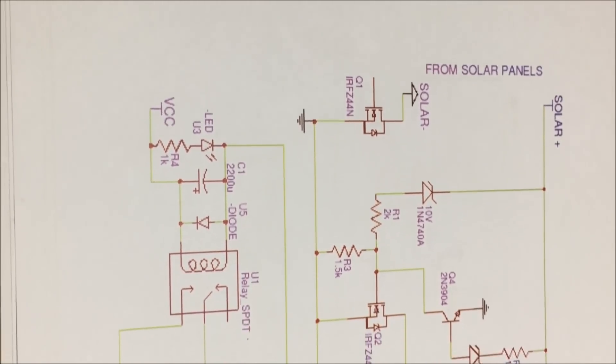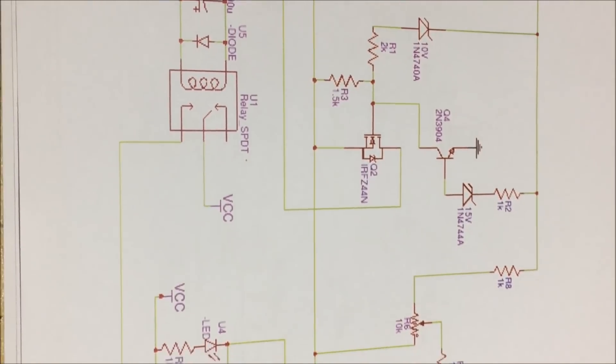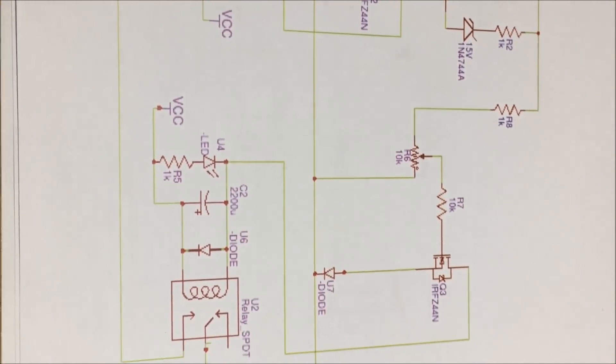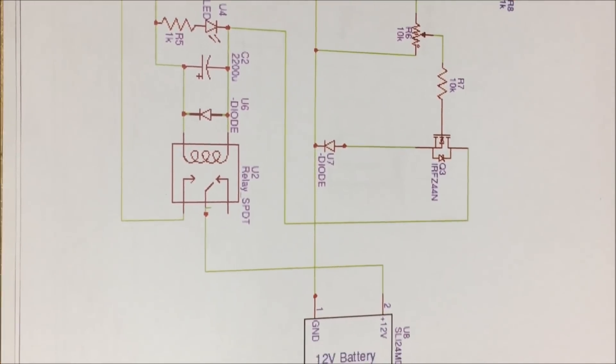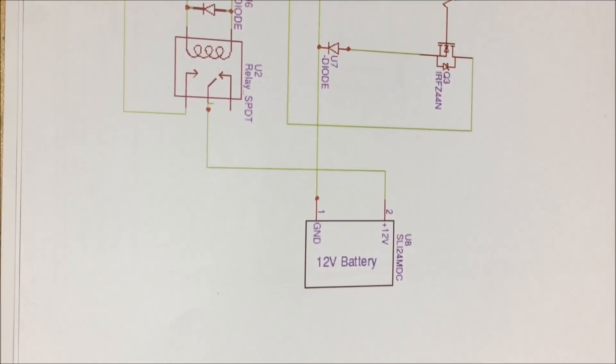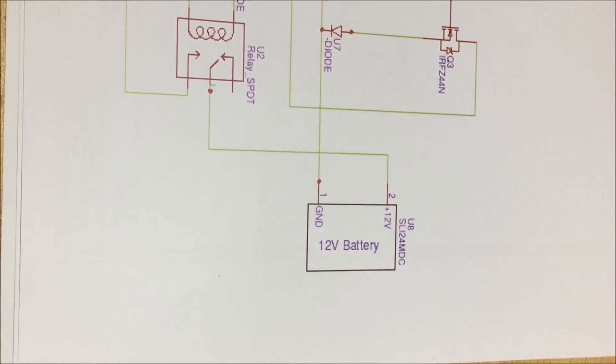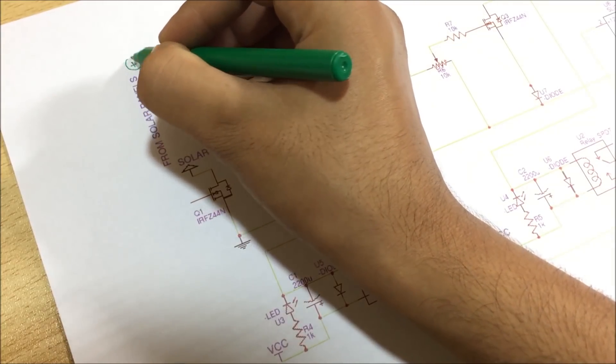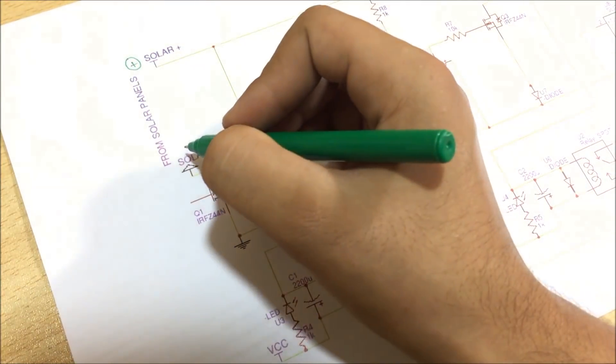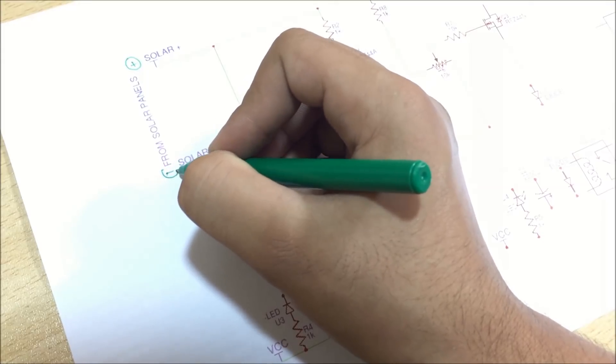Now, here is the circuit which I came up with. It is a rather simple circuit but it contains all the features that are necessary for the protection of both the battery and the panels. Before going into the details of components, let's first understand how the circuit actually works.